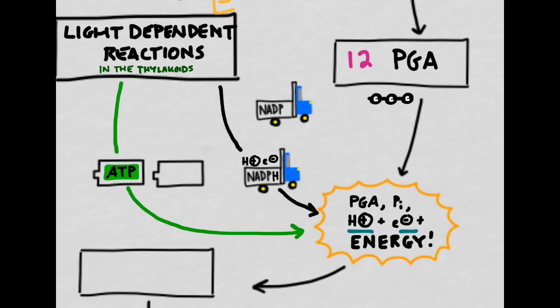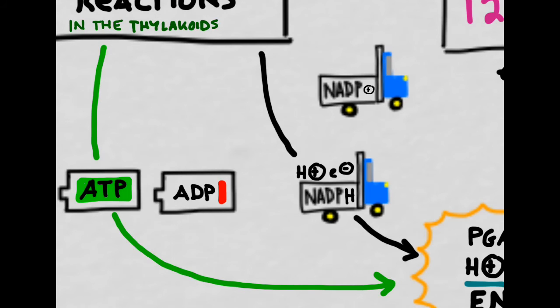Our final ingredient, inorganic phosphate, will come from our good friend ATP from the light-dependent reactions. Once the ATP and the NADPH have dropped off the important components to this chemical reaction, they are in their lower energy form.